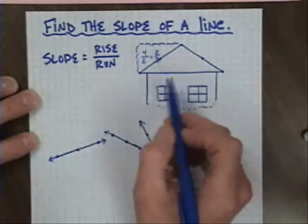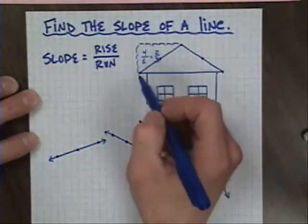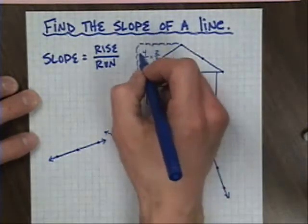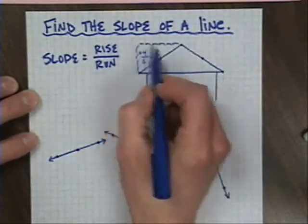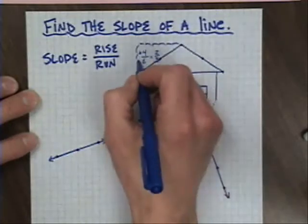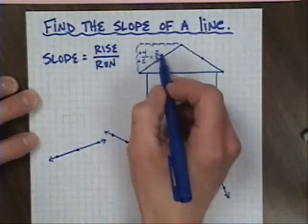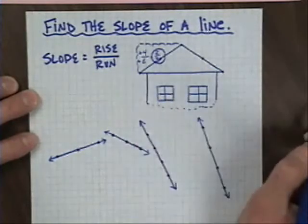We did not deal with positive or negative yet. What I'd like to suggest is that if I'm moving up, that's a positive. And if I'm moving right, that's also a positive. And a positive divided by a positive gives you positive two-thirds.